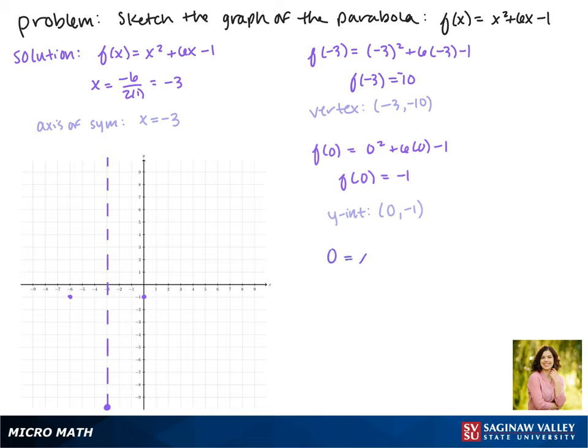Next, we can find the x-intercepts by plugging in 0 for y. Since this cannot be factored, we have to use our quadratic formula: x = [-b ± √(b² - 4ac)] / 2a.